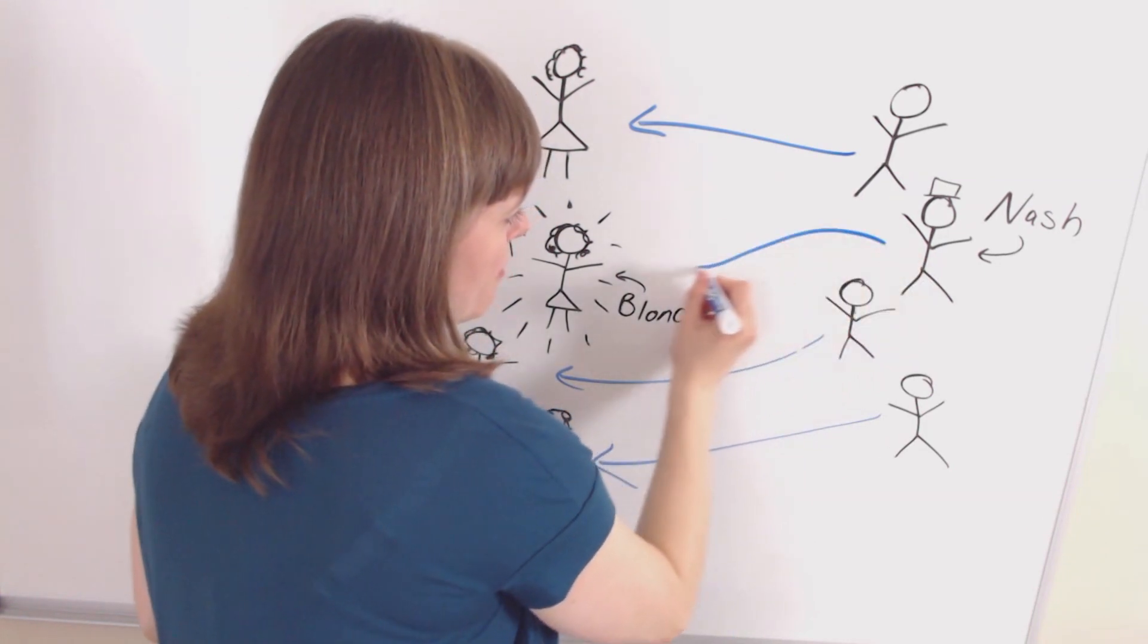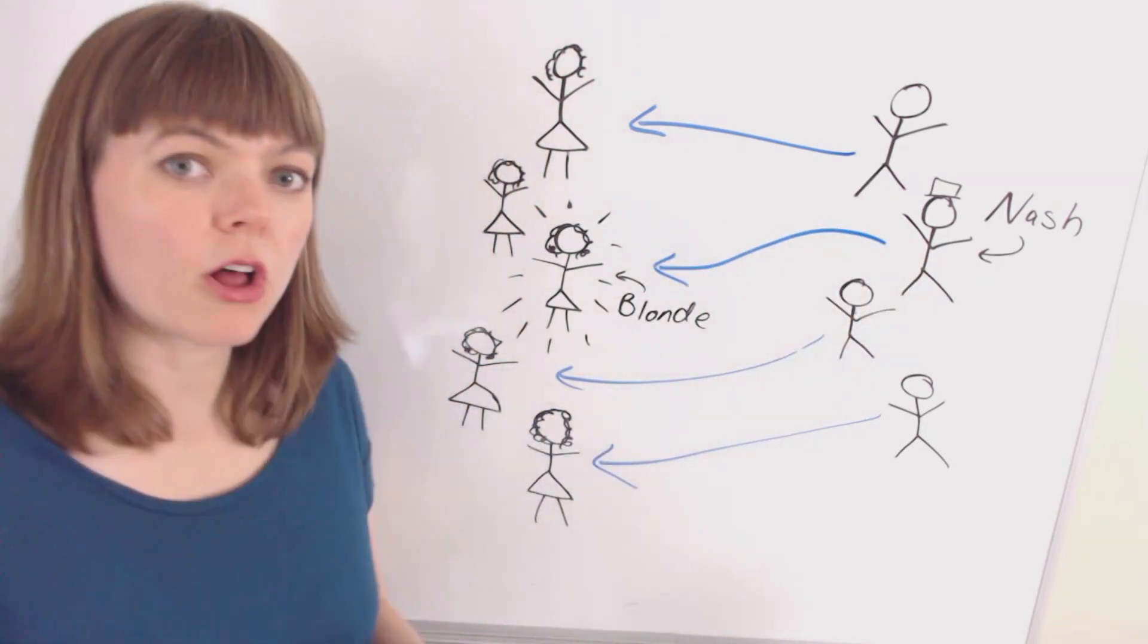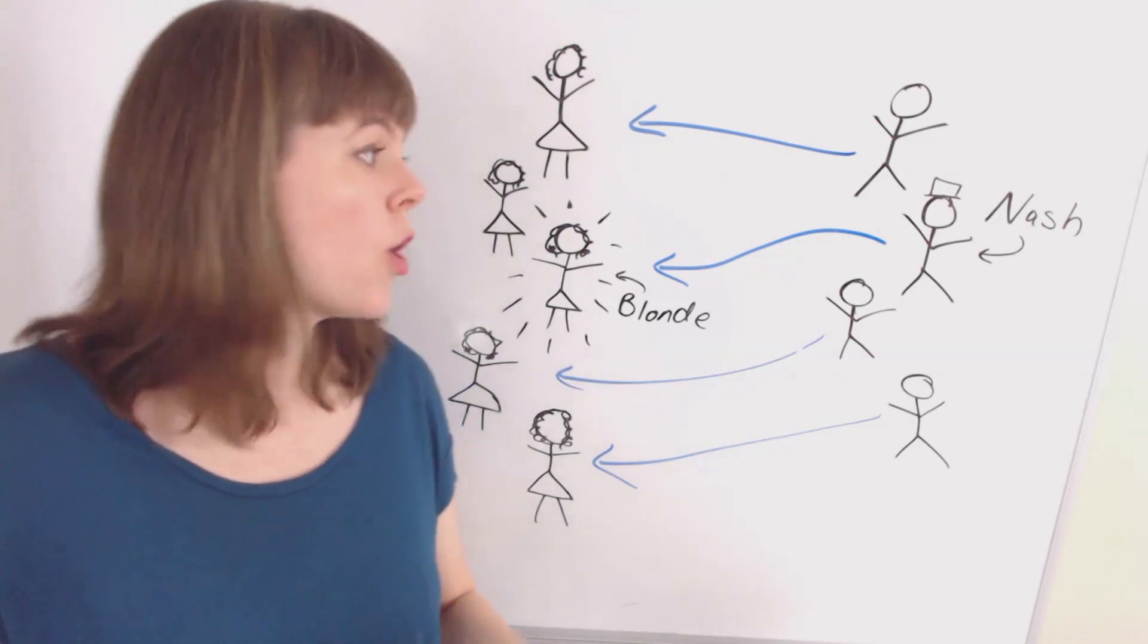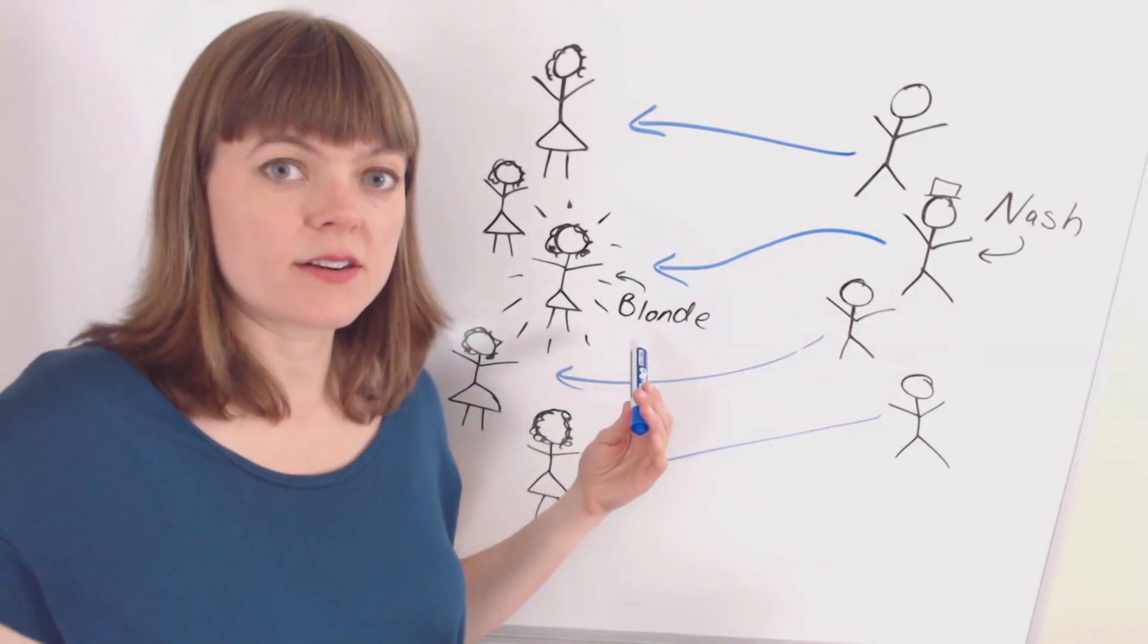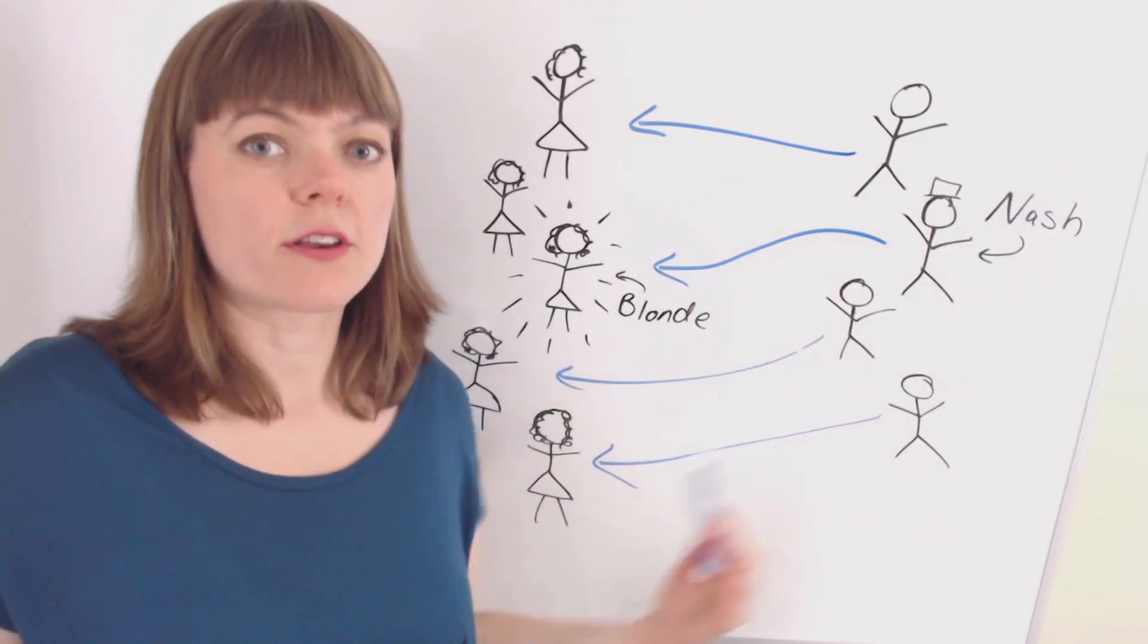As a matter of fact, there are a number of Nash equilibriums here, but all of these Nash equilibriums involve one of the guys going for the blonde and the other guys going for the brunettes.